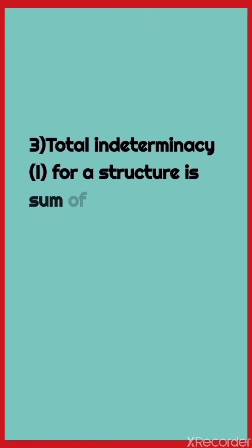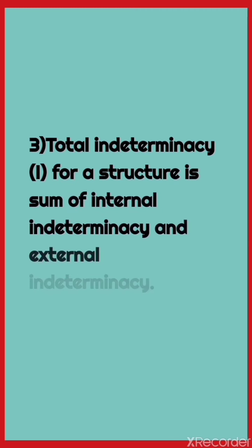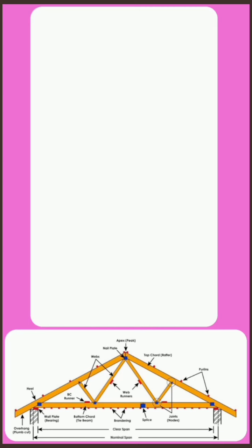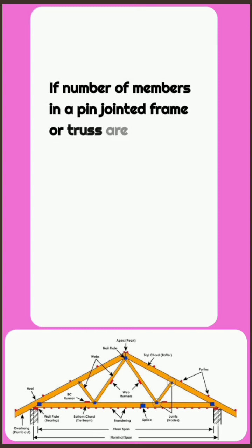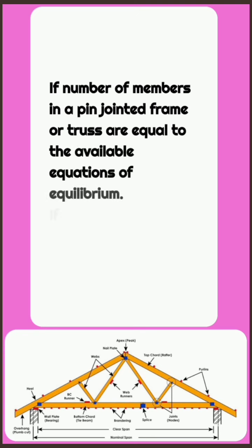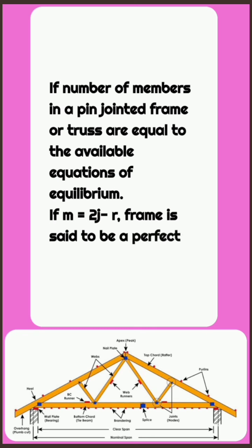3. Total indeterminacy. The total indeterminacy of a structure is the sum of internal and external indeterminacy: i = iA + ii. If the number of members equals the available equations of equilibrium, i.e., if m = 2j − r, the frame is said to be a perfect frame.